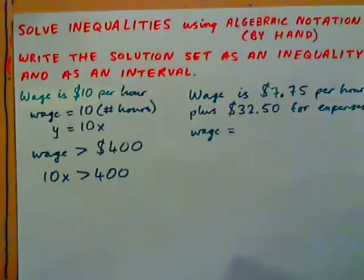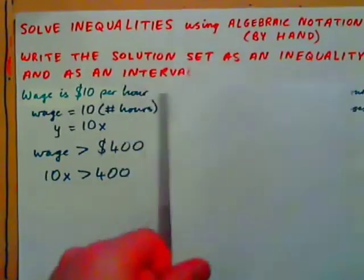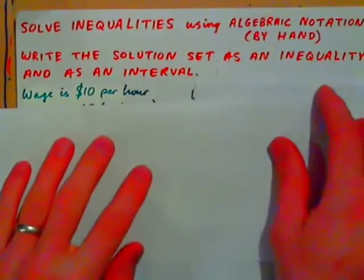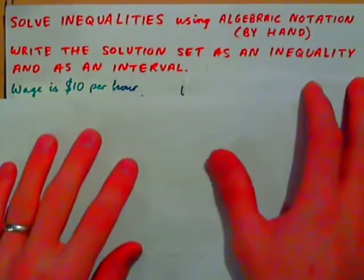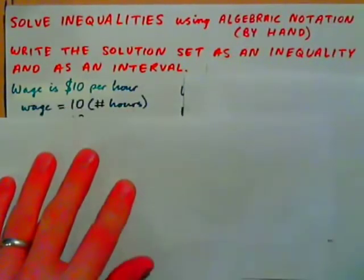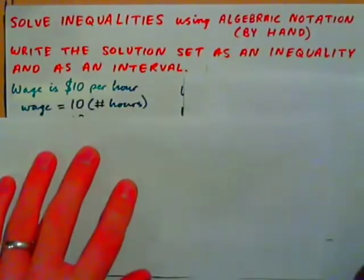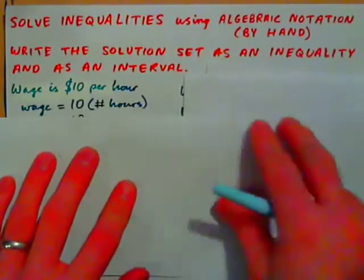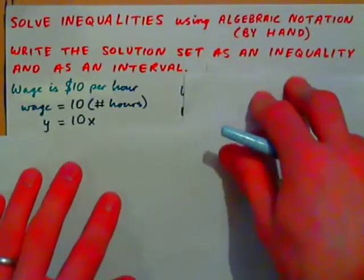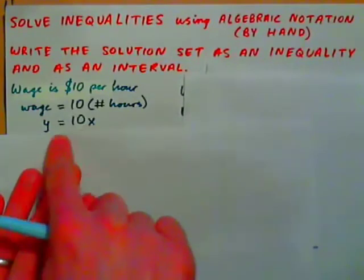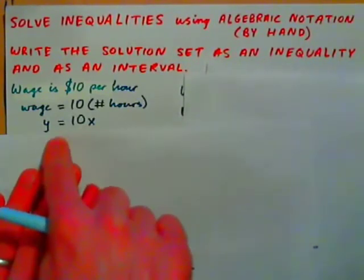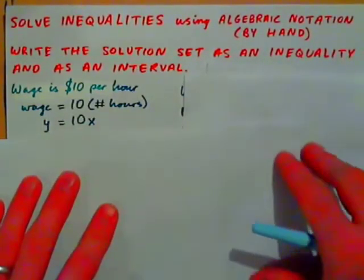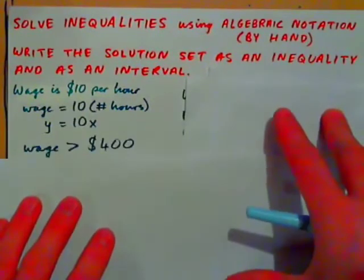Let's begin. If your wage is $10 per hour, that means your wage is 10 times the number of hours you work. So if you work 40 hours, you get $400. You could say y equals 10x — that would be an equation describing your wage, where y is wage and x is number of hours. And we could come up with an inequality from this.